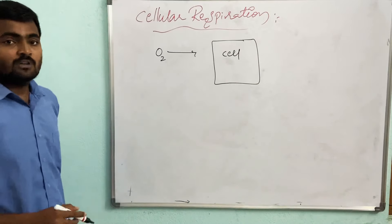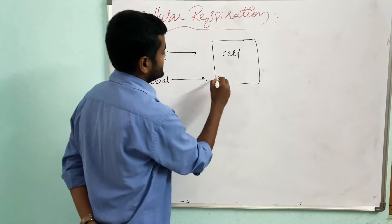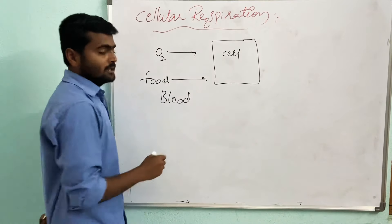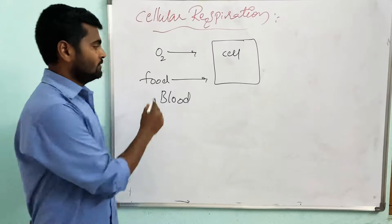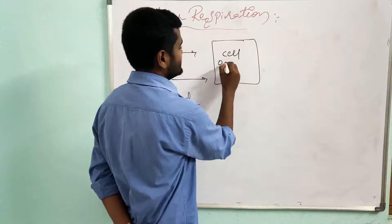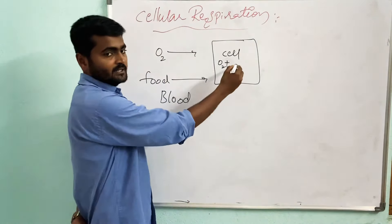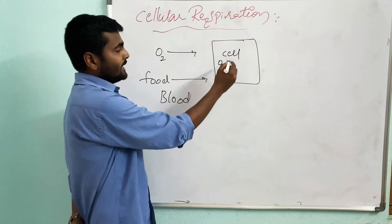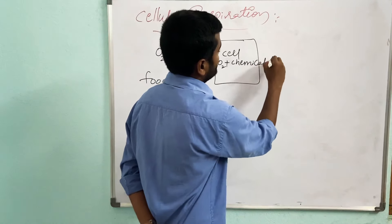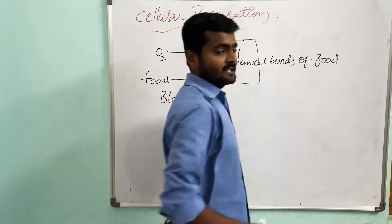Each and every food molecule is brought into the cell by the blood. So by the blood, oxygen is brought into the cell and food molecules are also brought into the cell. Inside the cell, this oxygen breaks the chemical bonds of the food material which has entered into the cell.